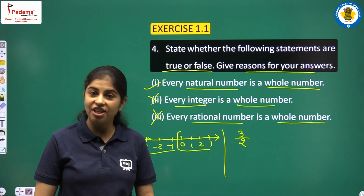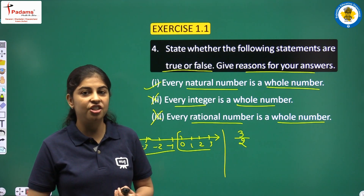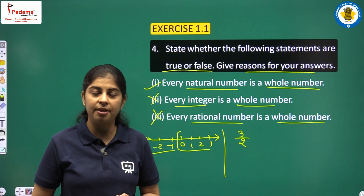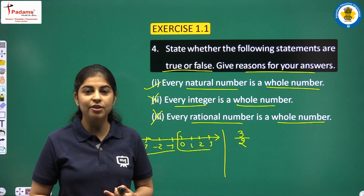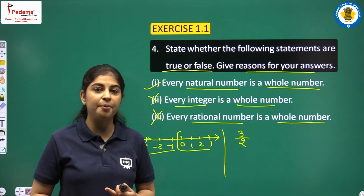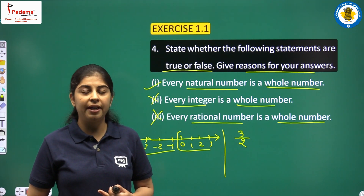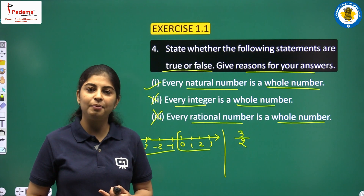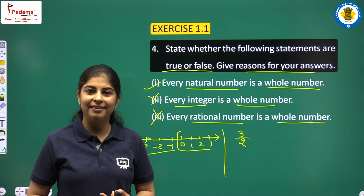Today we covered definitions of natural numbers, whole numbers, integers, and rational numbers, along with some examples, and we completed Exercise 1.1. In the next video we will learn about irrational numbers, their representation on the number line, and complete Exercise 1.2. See you then, bye!